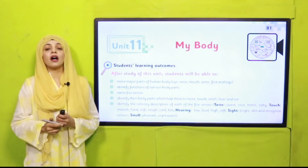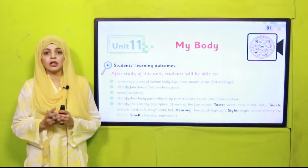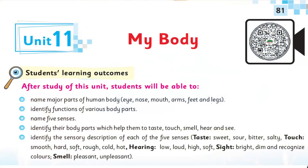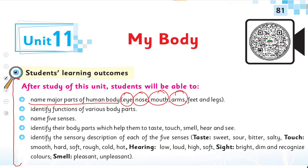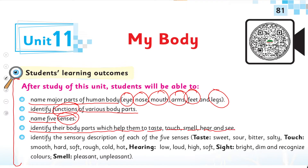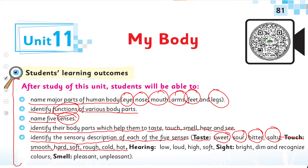Let's quickly look at the Student Learning Outcomes given on page number 81. These are for the parents and teachers to understand that by the end of Unit Number 11, students will be able to name major parts of the human body — eye, nose, mouth, arms, feet and legs — identify functions of various body parts, name the five senses, identify which body parts help them to taste, touch, smell, hear, and see, and identify sensory descriptions: taste — sweet, sour, bitter, salty; touch — smooth, hard, soft, rough, cold, hot; hearing — low, loud, high, soft; sight — bright, dim; smell — pleasant and unpleasant.